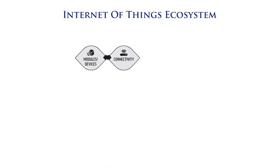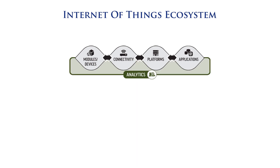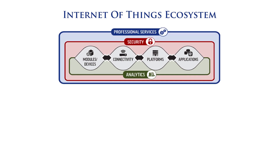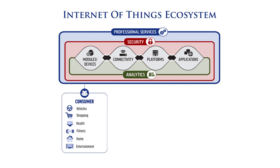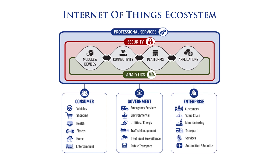Now that we've described what we mean by the Internet of Things, it's time to look at the ecosystem that supports it. The ecosystem starts with modules that connect over a network through a platform and generate information on an application. Between these different devices, a large amount of information is transmitted and captured. What's really going to drive the Internet of Things is the development of intelligent systems by leveraging analytics and initiating next actions. All components need to be secured, and then a vendor needs to pull together multiple products from multiple vendors to create a single IoT solution — benefiting consumers, governments, and enterprises alike. This ecosystem is quite exciting and already quite sizable in 2014.